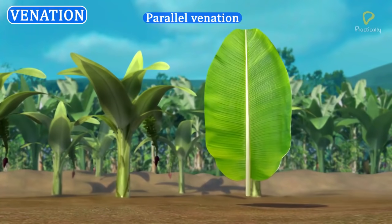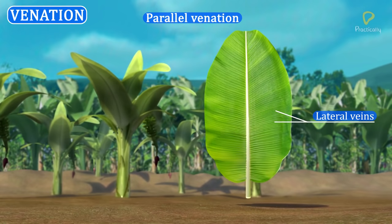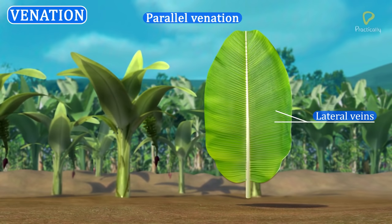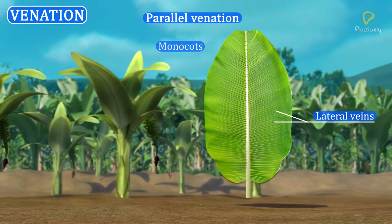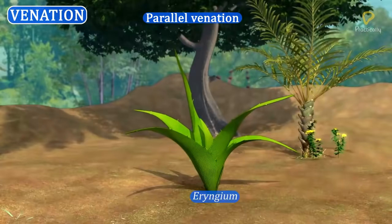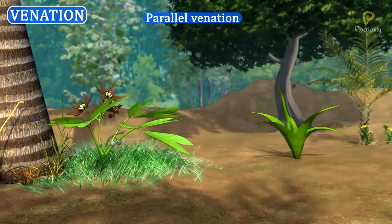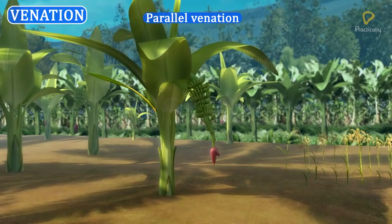Parallel venation: In this venation, all lateral veins run parallel to each other. They do not form a network, and veinlets are absent. It is generally observed in monocots. Caulophyllum and Eryngium are dicots with parallel venation. Parallel venation is divided into two types based on the number of mid-veins present: pinnate parallel venation and palmately parallel venation.